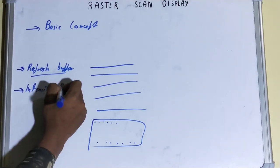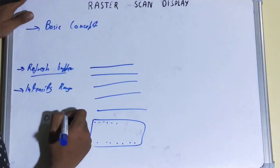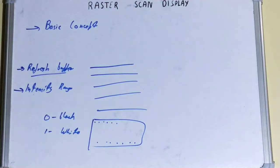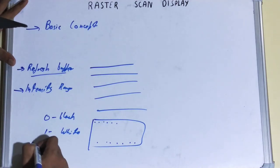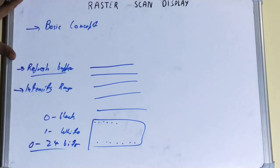Now let's discuss intensity range. For a normal black and white raster scan display, the intensity range was just one bit per pixel — zero for black and one for white. That's why in a black and white raster display, the frame buffer was also called a bitmap, because it was just one bit per pixel. But in a colored raster scan display, the intensity values range from 0 to 24 bits.